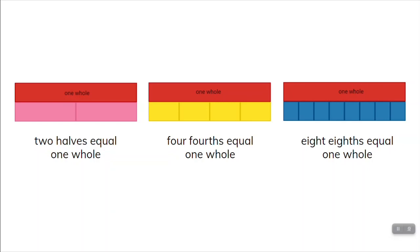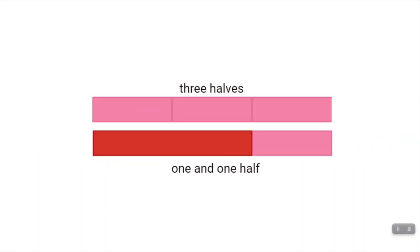Fractional parts can be used to represent more than one whole. Present three halves to students and ask: how many one halves are represented? Count the halves — one half, two halves, three halves. There are three halves. Two halves compose one whole and there is one more half left. Three halves is the same as one and one half.